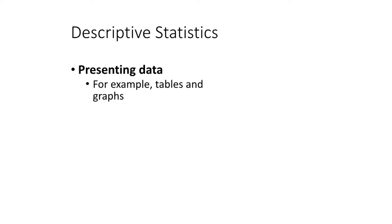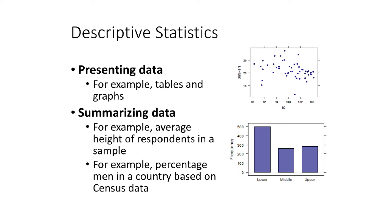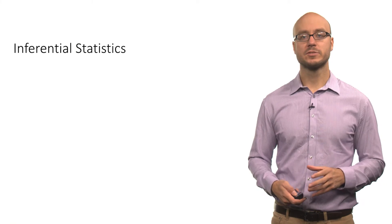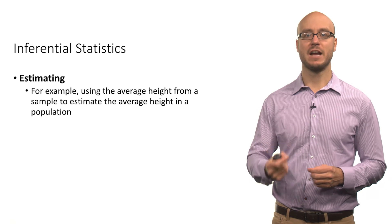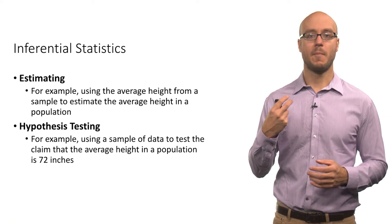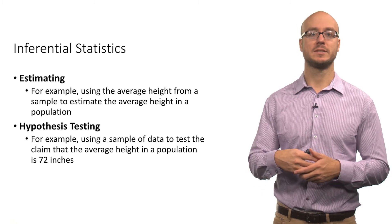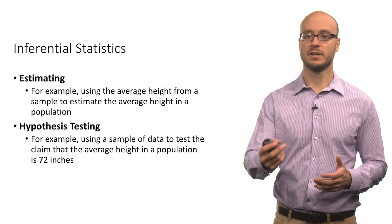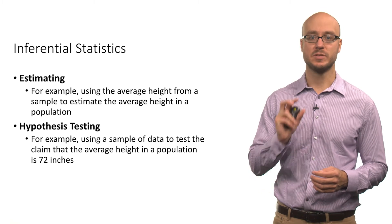Descriptive statistics involves presenting data in tables or visual tools such as bar graphs and bar charts, and summarizing data — for example, the average height of respondents in a sample, or the percentage of men in a country based on census data. Inferential statistics involves estimating — for example, using the average height from a sample to estimate the average height in a population — and hypothesis testing, such as testing whether the average height in a population is 72 inches using a collected sample.